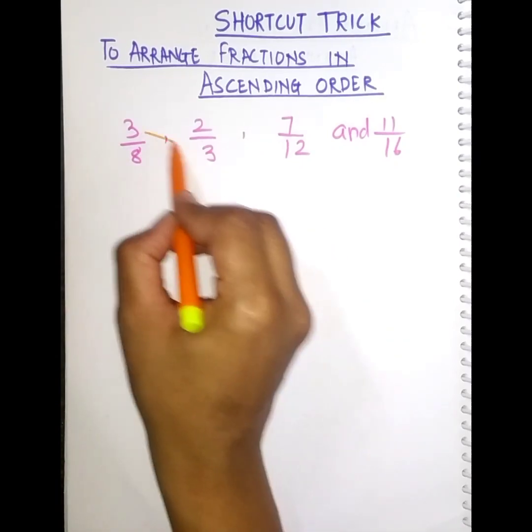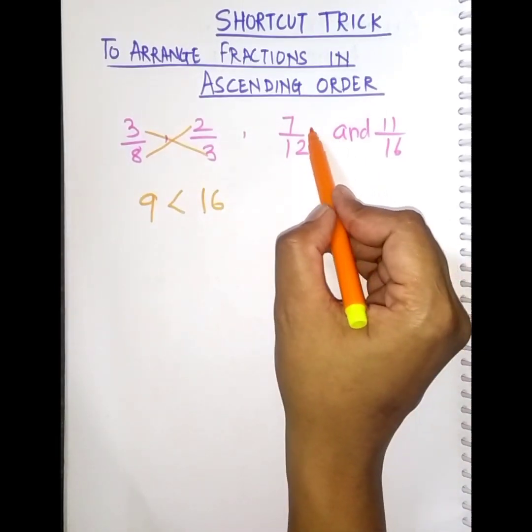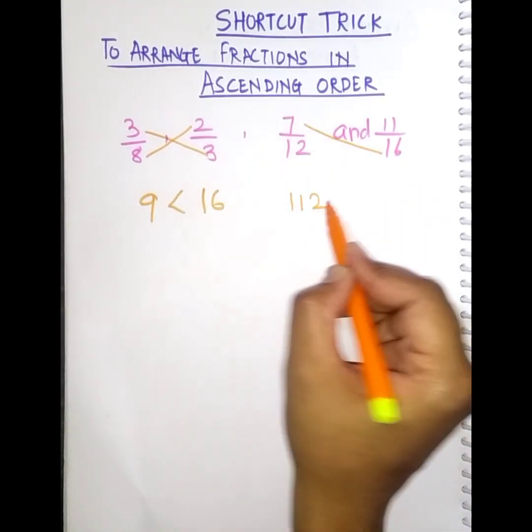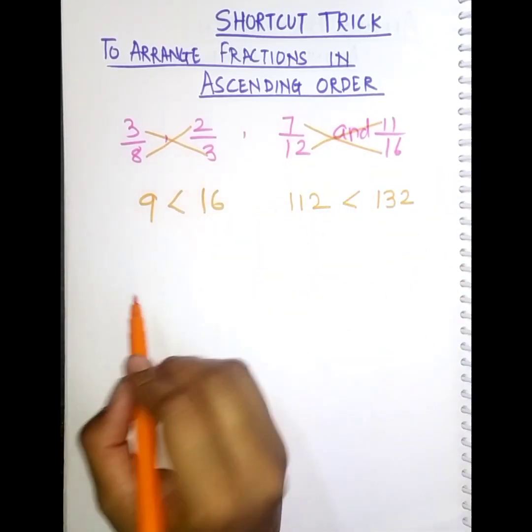So if I take the first two, 3 into 3 is 9 and 8 into 2 is 16. So out of these two, 9 is smaller. Then 7 into 16 is 112 and 12 into 11 is 132. So out of these two, 112 is smaller.